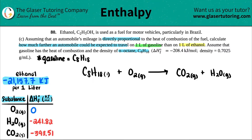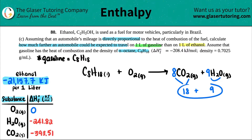Balancing the equation: there are 8 carbons, so put 8 in front of CO2. There are 18 hydrogens, so put 9 in front of H2O — nine times two is 18. On the oxygen side: 8×2 = 16 from CO2 plus 9 from H2O gives 27 total oxygens, so O2 gets a coefficient of 27/2.